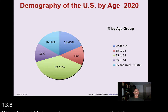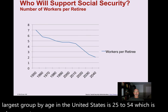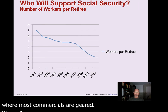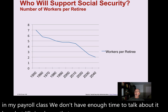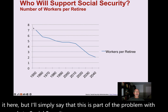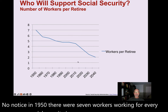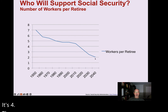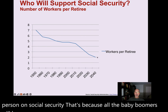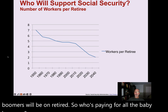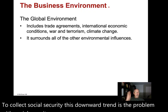The largest age group in the United States is 25 to 54. Who will support social security? In 1950, there were seven workers for every person on social security. In 2020, it's four. The projection is to have two people working for every person on social security because all the baby boomers will be retired. This downward trend is the fundamental problem with social security.